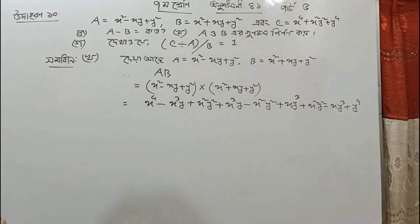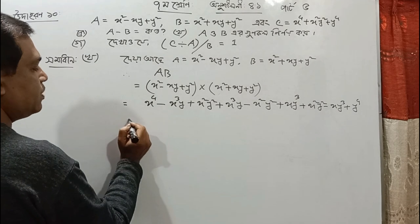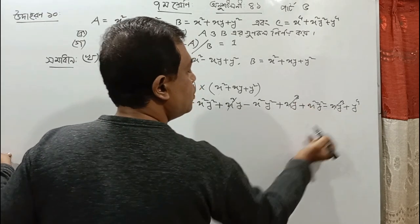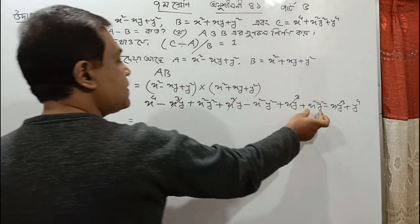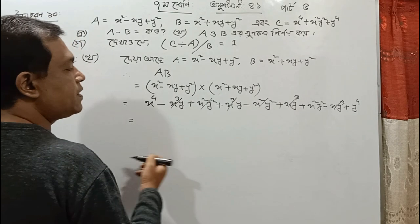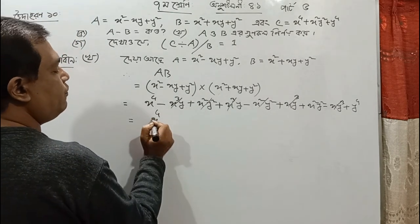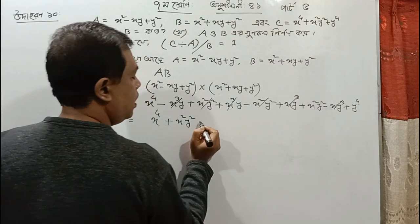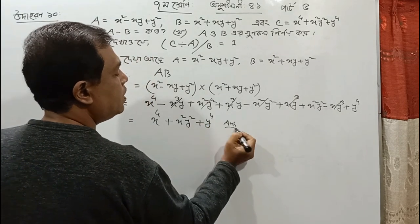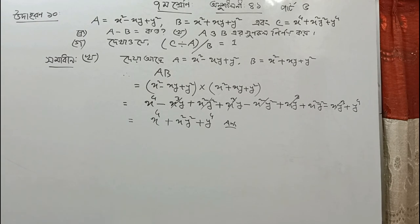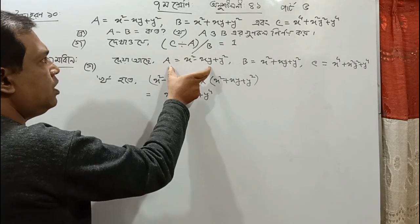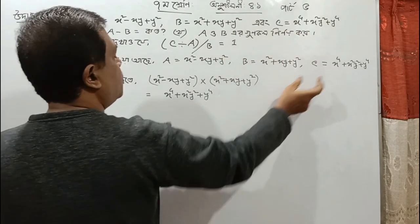Minus x cube y, plus x cube y; xy cube, plus xy cube minus. If you cancel x squared y squared, do plus, and x squared y squared minus x squared y squared cancel out. So just x to the power 4, plus x squared y squared, plus y to the power 4. We can simply take both: a, b, c — three terms — with a to the minimum, b to the minimum, c to the minimum.